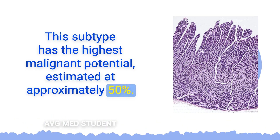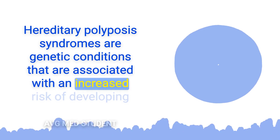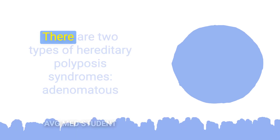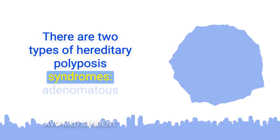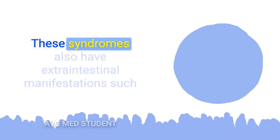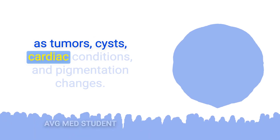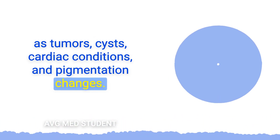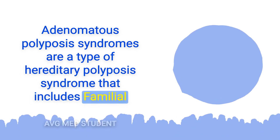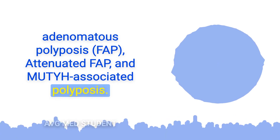Hereditary polyposis syndromes are genetic conditions associated with an increased risk of developing colon cancer and tumors in other parts of the gastrointestinal tract. There are two types: adenomatous polyposis syndromes and hamartomatous polyposis syndromes. These syndromes also have extra-intestinal manifestations such as tumors, cysts, cardiac conditions, and pigmentation changes. Adenomatous polyposis syndromes include familial adenomatous polyposis, attenuated FAP, and MUTYH-associated polyposis.